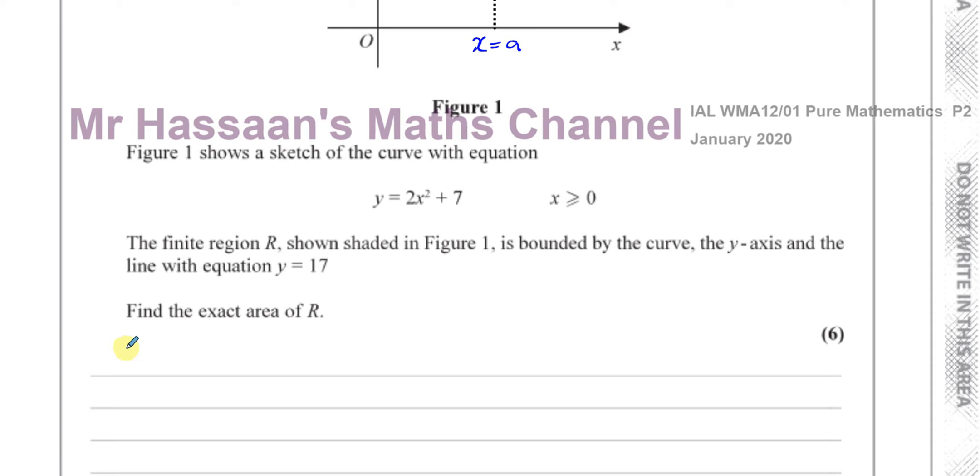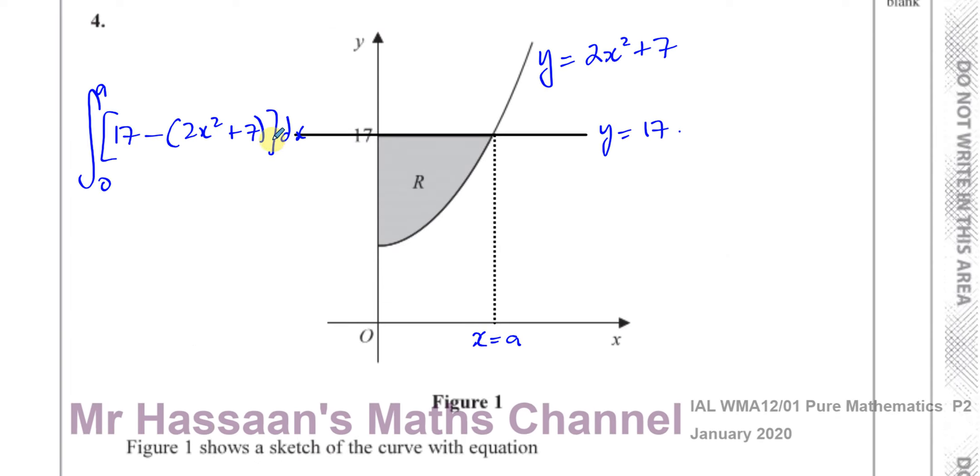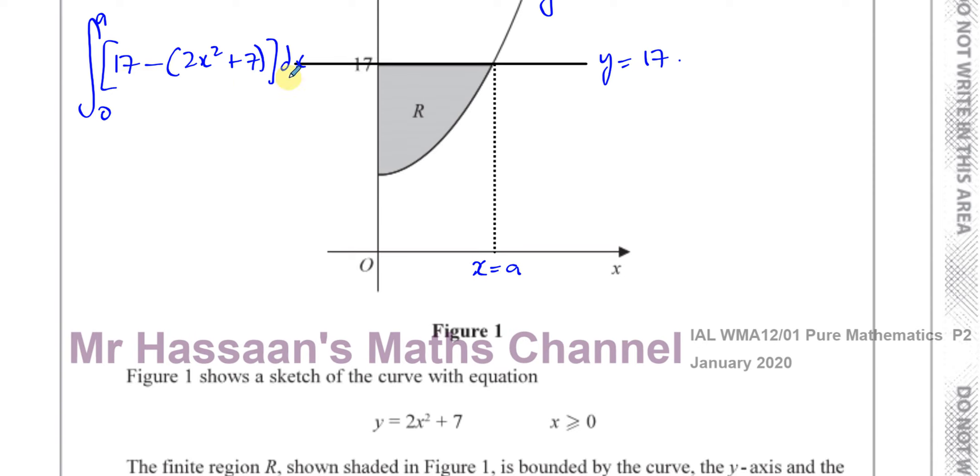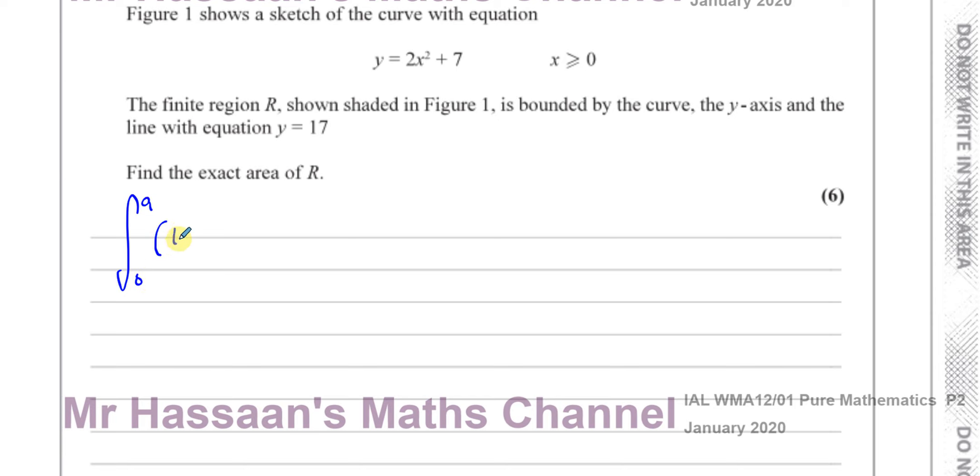So our next objective now is to find what a is, where these two intersect. And where they intersect, they're both, you can solve that simultaneously, you see basically, where they're both equal to each other. So basically, I need to find the integral between 0 and a, which you have to find, of, now if we simplify that, that would be 17 minus 7, which is 10, 10 minus 2x squared. I'm just simplifying that. 17 minus 7 is 10, and minus 2x squared. So you're going to have to integrate 10 minus 2x squared with respect to x between 0 and a. So to find a, we've got to find where they intersect. So 2x squared plus 7 is equal to 17. So 2x squared is equal to 17 minus 7, which is 10. So x squared is equal to 5. So x is equal to plus or minus the square root of 5.